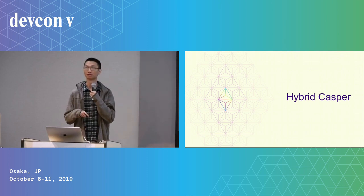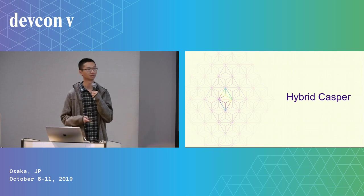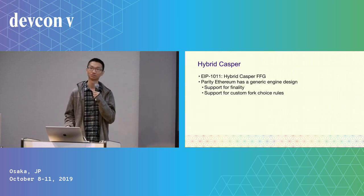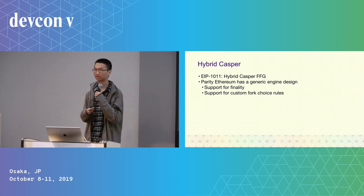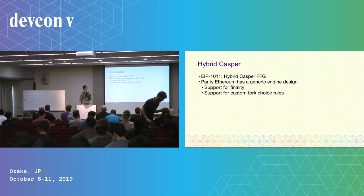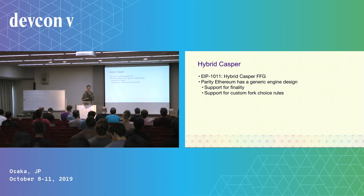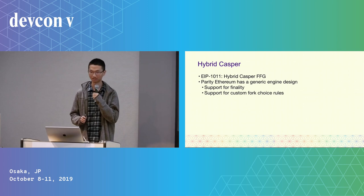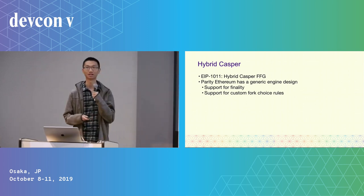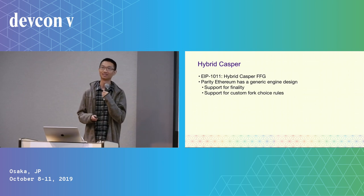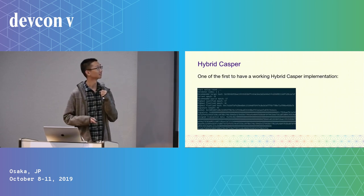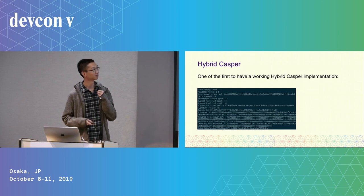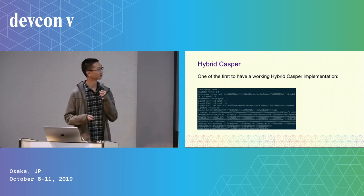The first thing I remember for Ethereum 2.0 was hybrid Casper. At that time, we were experimenting with having a generic engine design in our Parity Ethereum client. We had support for finality and also support for custom fork-choice rules. So adding the hybrid Casper FFG turned out to be a relatively easy task, and we had a working hybrid Casper implementation quite early — and it actually works.